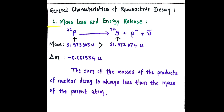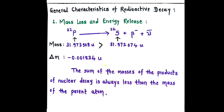The first characteristic is mass loss and energy release. Consider a reaction in which phosphorus having mass number 32 undergoes radioactive decay to form sulfur having mass number 32, along with emission of beta minus, that is electron, and anti-neutrino. If we consider the mass of phosphorus, it is 31.973908 units, while the mass of sulfur is 31.972074 units. It means that the mass of sulfur is less than the mass of phosphorus, so the delta M, that is change in mass, is minus 0.001834 units.